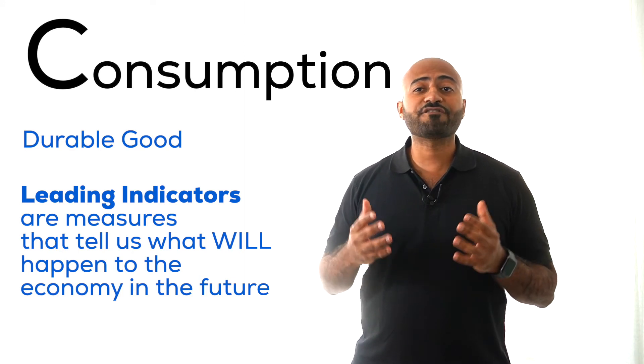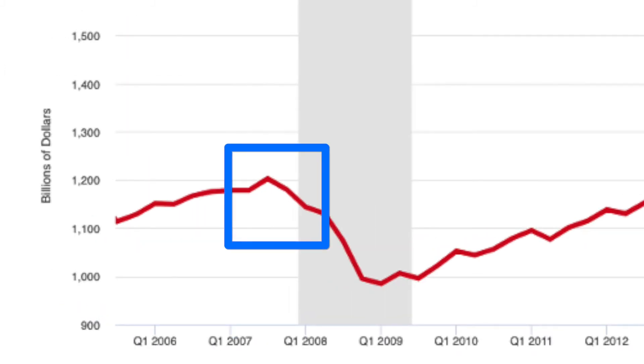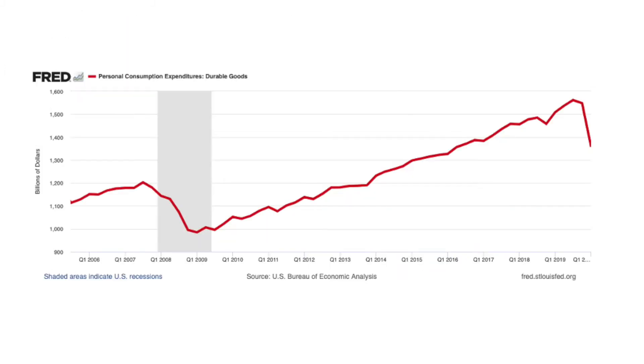This is a graph of quarterly U.S. personal consumption on durable goods from 2006 to 2020. Spending on durable goods started to fall before the US officially went into recession. We can see a fall in spending on durable goods in the first quarter of 2020.